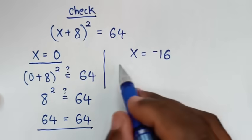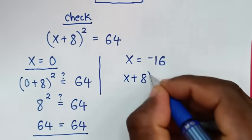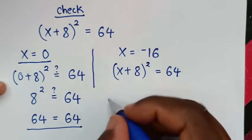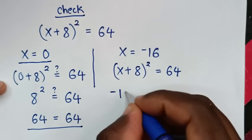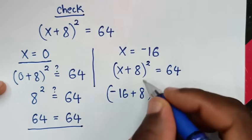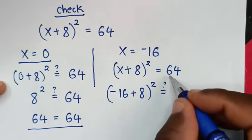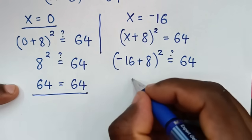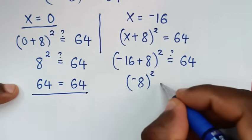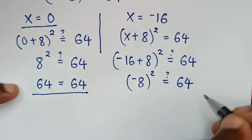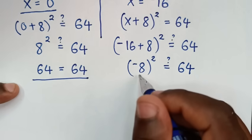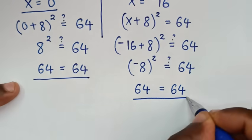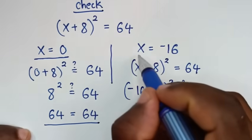Now let's check x = −16. From (x + 8)² = 64: (−16 + 8)² = (−8)² = 64. The left side equals the right side, so it is true for x = −16.